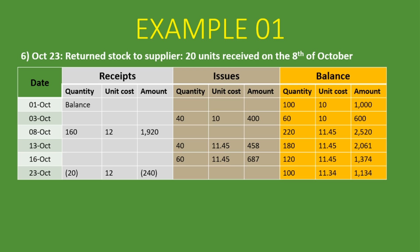In summary: whenever you bring in new inventory or return inventory to a supplier, you must recalculate the new weighted average unit cost by dividing the total cost of stock on hand by the total number of units on hand. Whenever you issue or sell inventory, you do not recalculate — you use the existing weighted average unit cost. If you have any questions, leave them in the comment section below. If you've gained value from this lesson, please subscribe, like this video, and share it with those who might benefit.